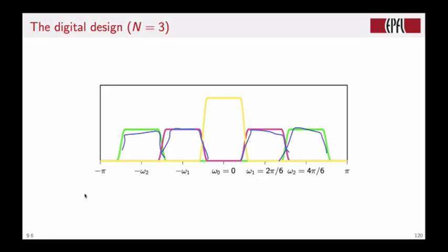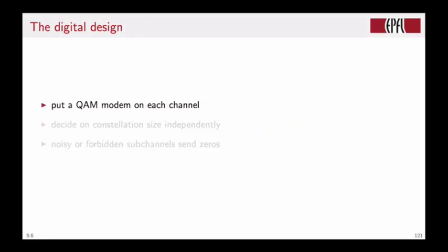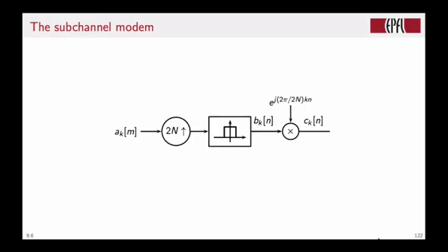The next step in ADSL communication is to put a QAM modem on each sub-channel independently, and we will decide on the data rate for each modem based on the signal-to-noise ratio of each sub-channel. So if the noise floor is low, then we will have a large constellation for that sub-channel, and vice versa. On channels that are unusable because of noise or interference, we will just send zeros and we will not care about that. The structure of the signaling scheme is, of course, going to be communicated from the transmitter to the receiver so that the receiver knows where to expect data. This is part of the handshaking procedure between transmitter and receiver.